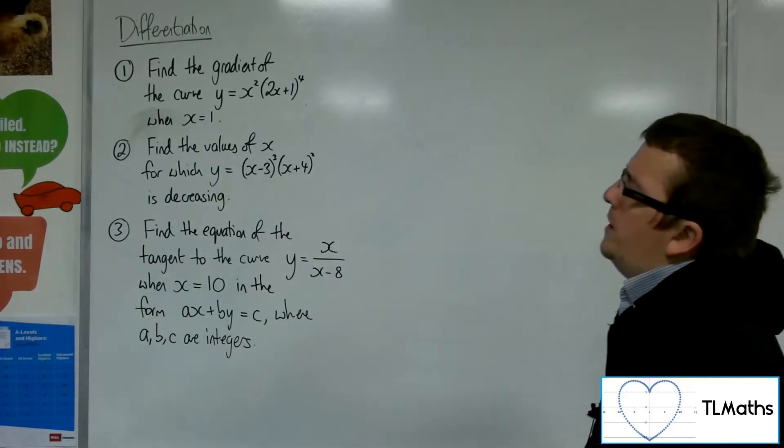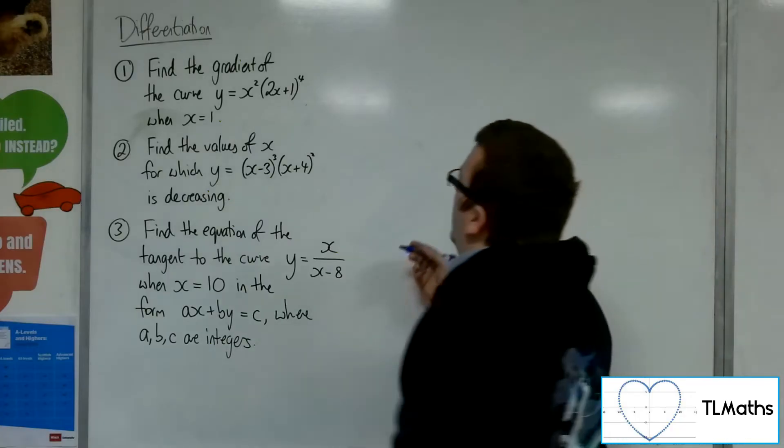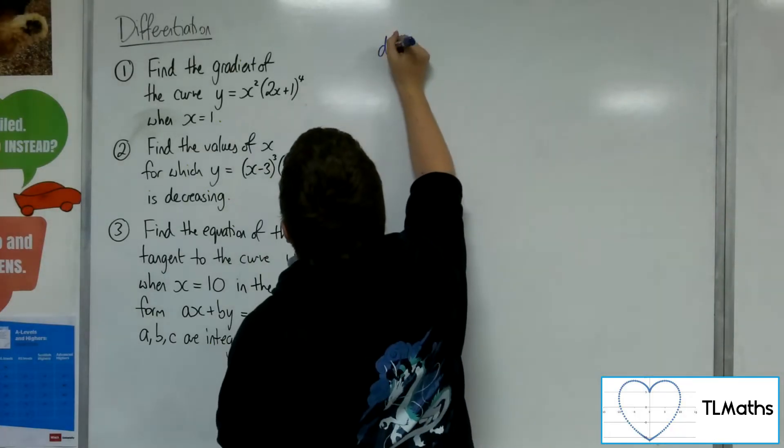So let's have a look at number one. Find the gradient of the curve y equals x squared times 2x plus 1 to the 4, when x equals 1. So first of all, we've got to find dy by dx.